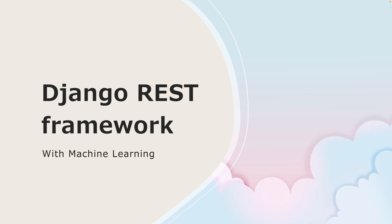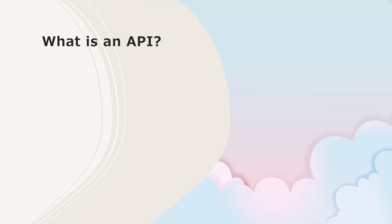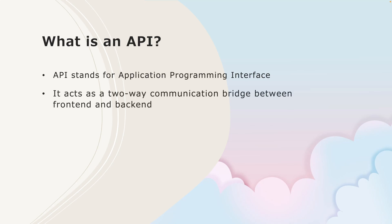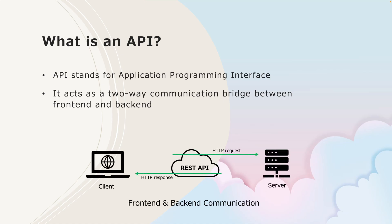Welcome back. In the previous video, I've been using the words API and API development a lot. Now in this one, let's understand what exactly an API is and how it works. API stands for Application Programming Interface. It's a two-way communication between the back end and the front end — this communication allows the front end to request data from the back end, and the back end will give a response to the front end.